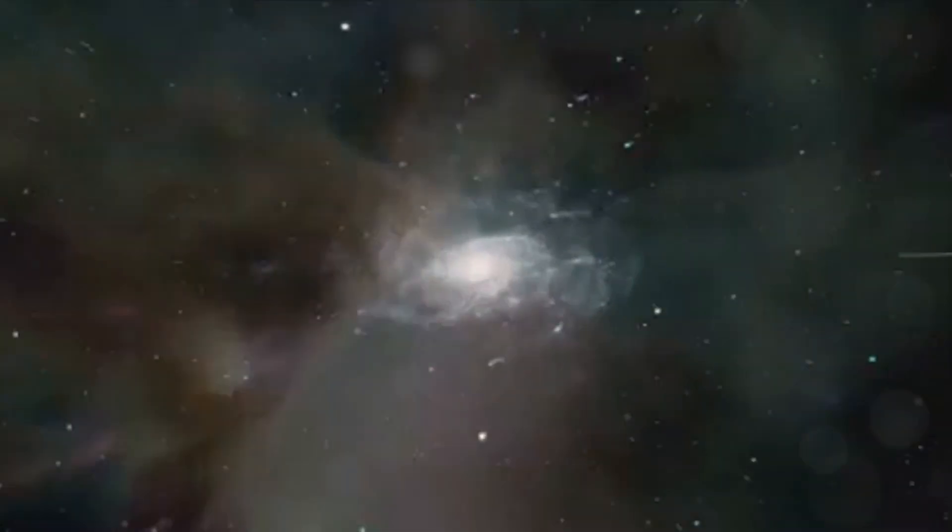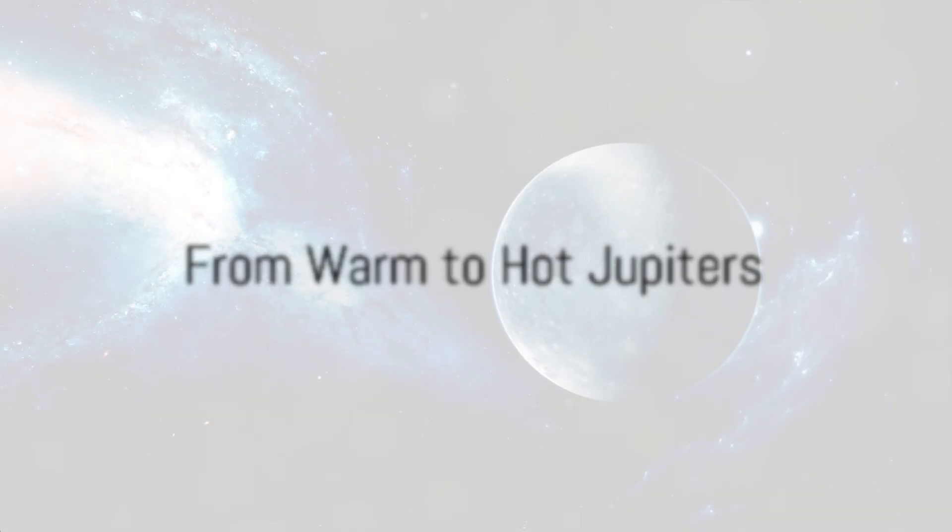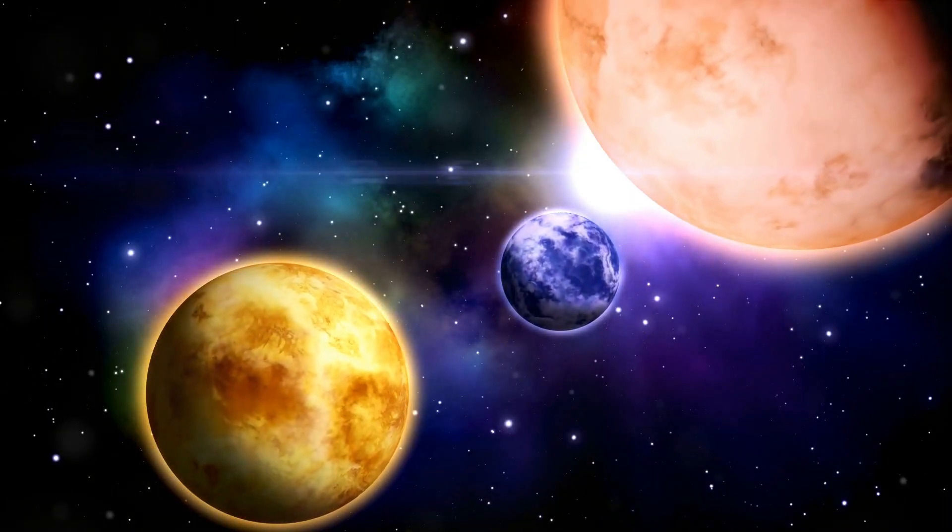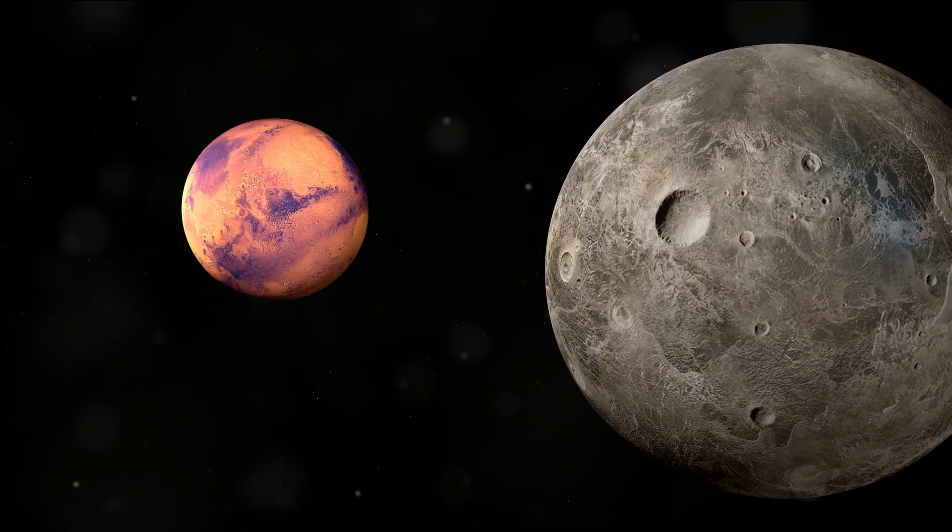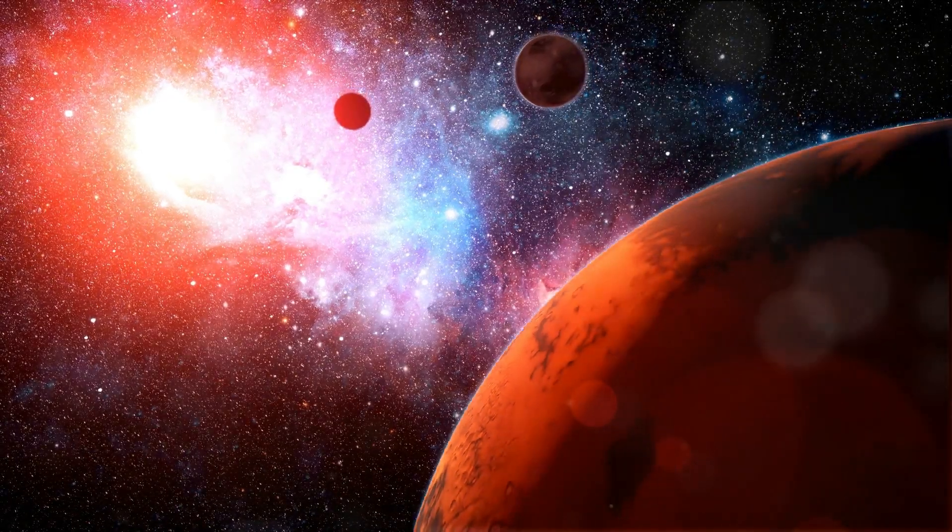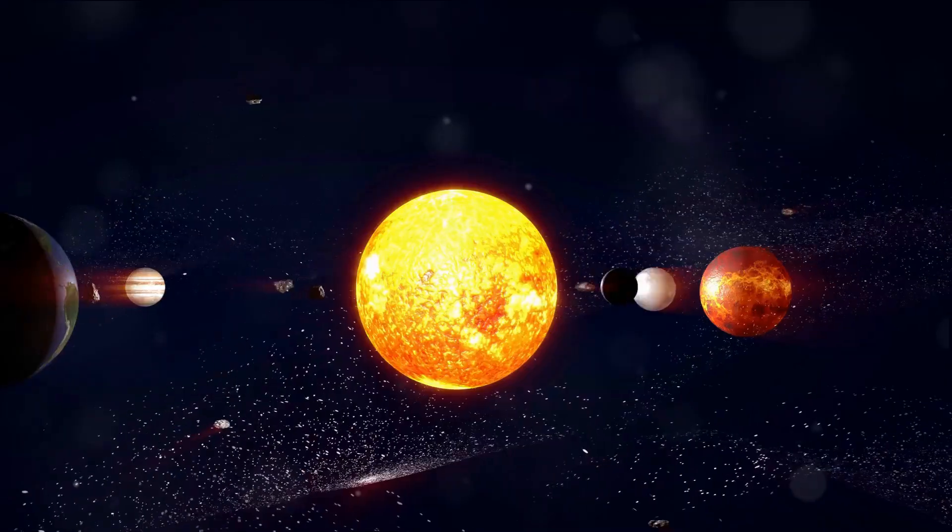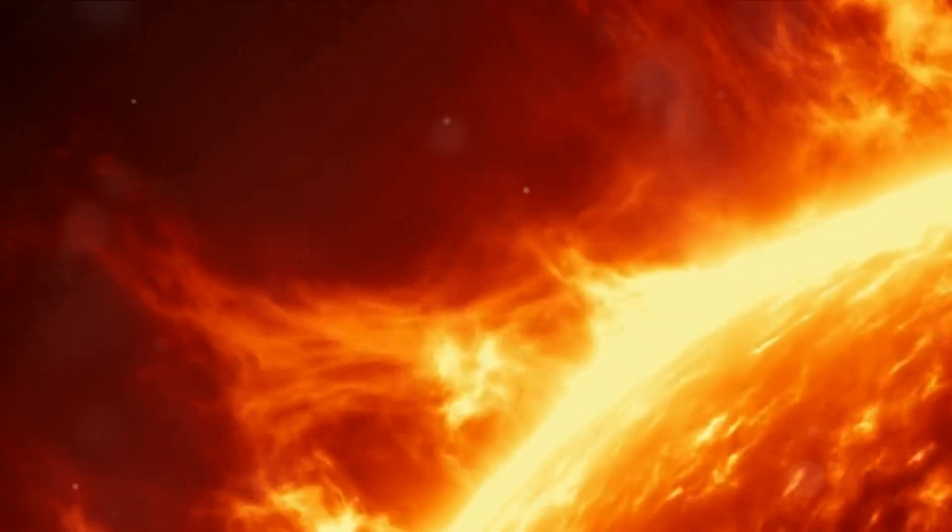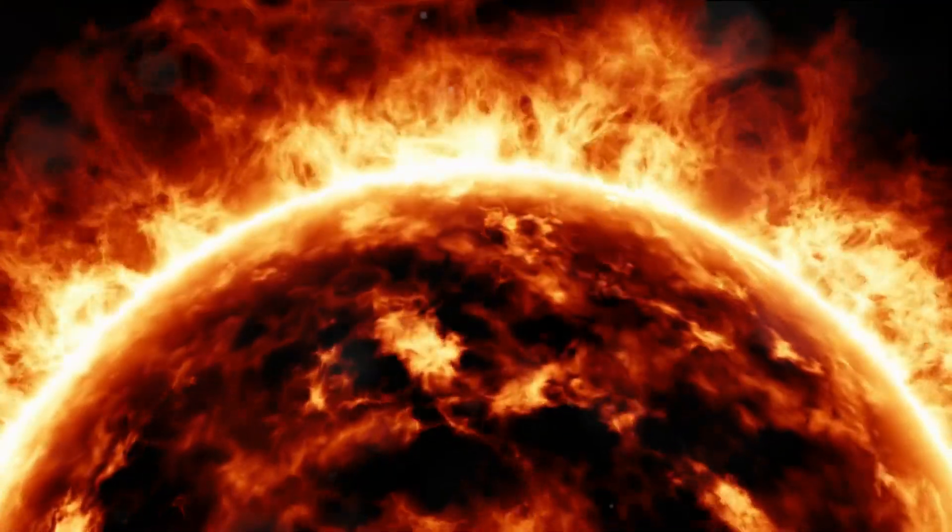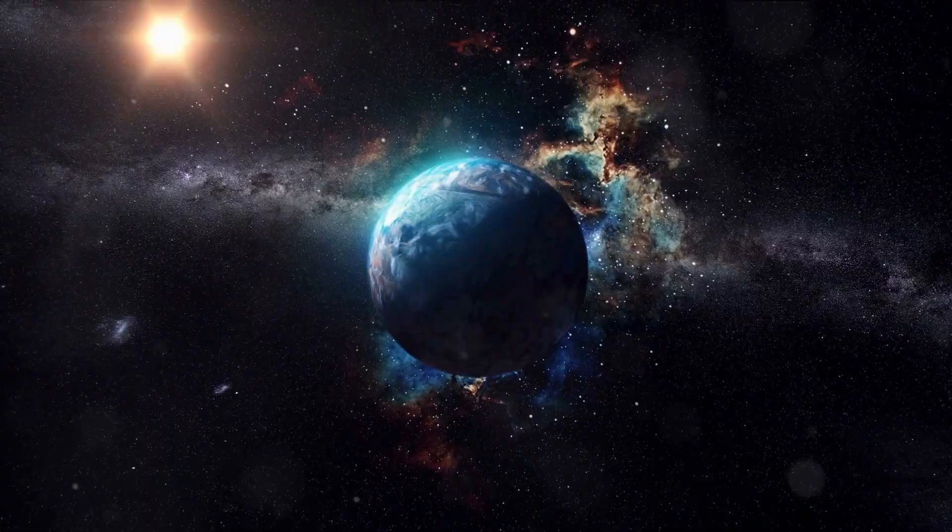The universe never ceases to surprise us, as our next discovery shows. TOI-4127b, a warm Jupiter, gives us a scorching look at these fascinating exoplanets. Now sit tight as we journey to this colossal world, located a staggering 1,061 light-years away from our home planet, Earth. TOI 4127b is not your average exoplanet. It's a heavyweight, boasting a mass 13 times that of our own Jupiter. But what really sets it apart is its temperature. Scientists estimate that the surface of this warm Jupiter could reach temperatures of nearly 630 degrees Fahrenheit. That's hot enough to melt lead. Now you might be wondering, what's a warm Jupiter?